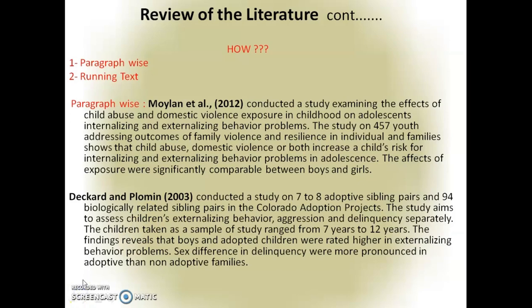While writing the literature review paragraph-wise, each new study you are citing should be in a new paragraph. For example, Deckard and Plomin — these are two writers — their surnames are written with the year 2003 in brackets. Then very briefly we state what the study was about, the sample size, how the study was conducted, the results, and the essence you get from the study.